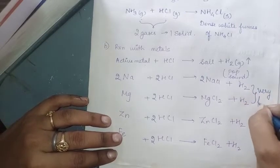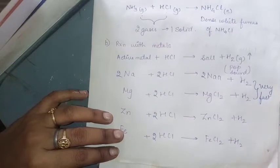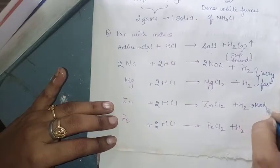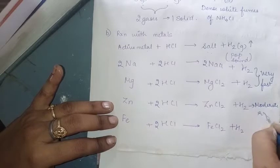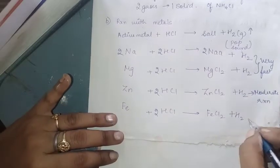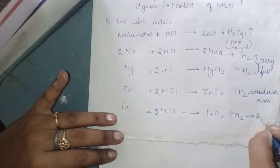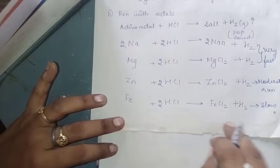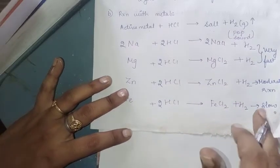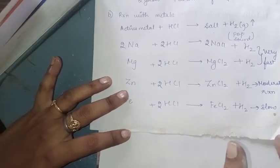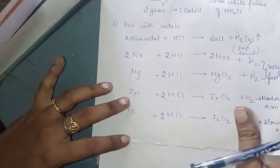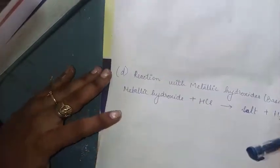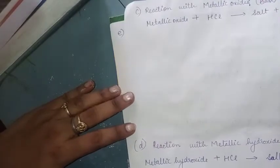Sodium and magnesium are highly reactive metals, so their reactions are very fast. Zinc is moderately reactive, so its reaction is moderate. Iron is less reactive, so the reaction with iron is slow.